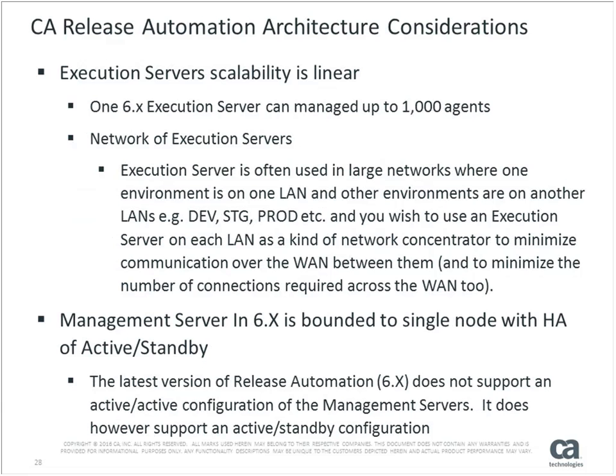Execution servers can scale out by adding more. A single execution server in 6.x can support up to 1,000 connected agents, with a recommended maximum of 400 agents running concurrently at any point in time. Execution servers tend to be geographically placed near target machines across WANs, or placed due to security, firewall, and departmental requirements. You need to look at the bigger picture of where the agents are and place your execution servers accordingly.